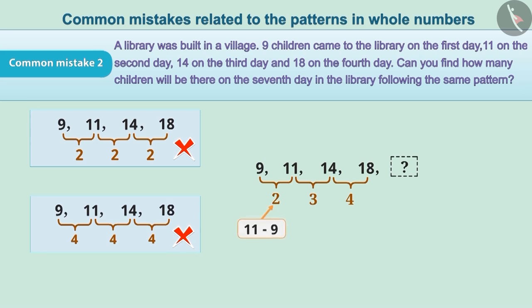If we subtract 9 from 11, we get 2. On subtracting 11 from 14, we get 3. Similarly, on subtracting 14 from 18, we get 4.